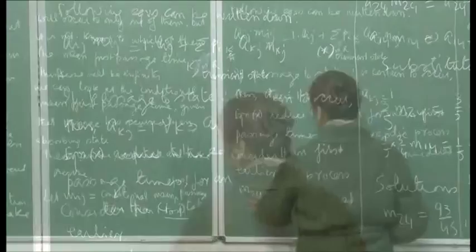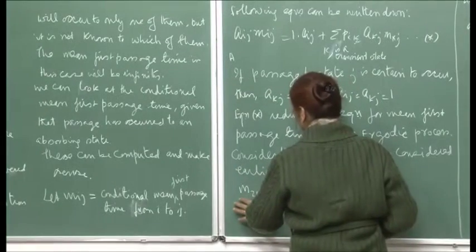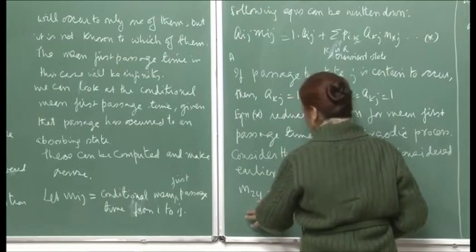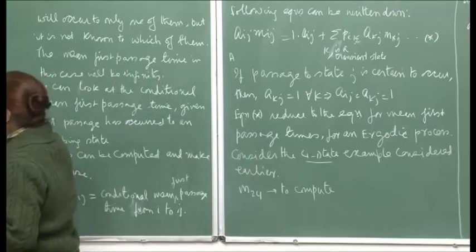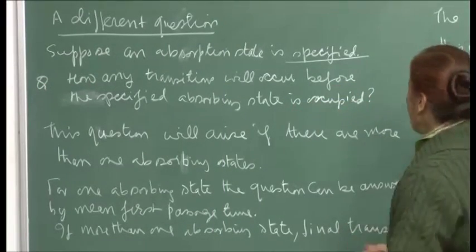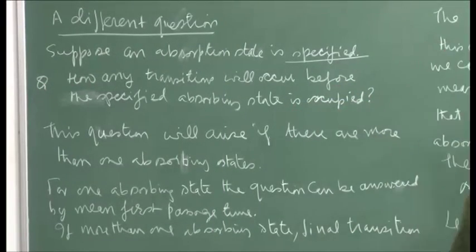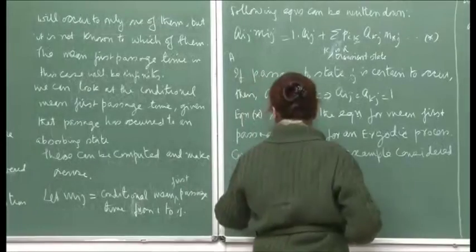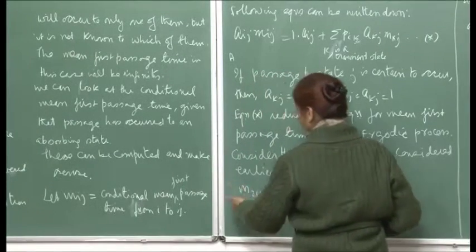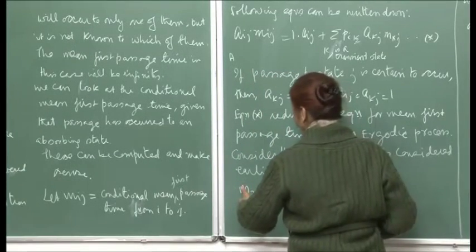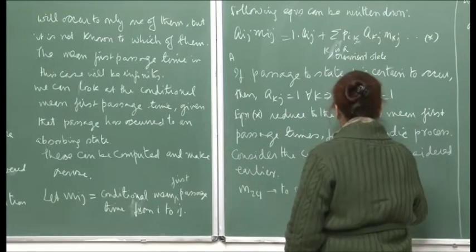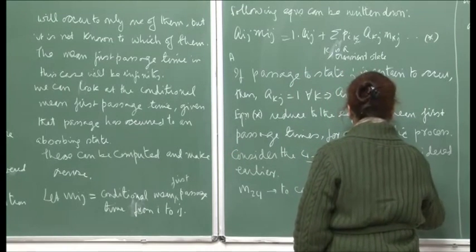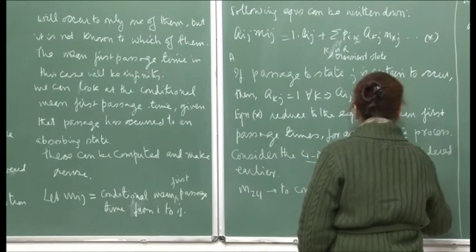To answer the question of how many transitions will occur before the specified absorbing state is occupied, it will be m_14 + m_24, which tells me the mean number of transitions required before occupying state 4.